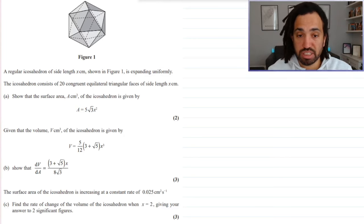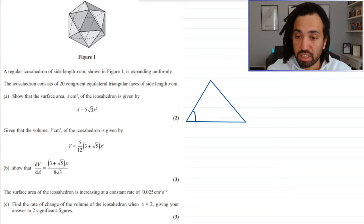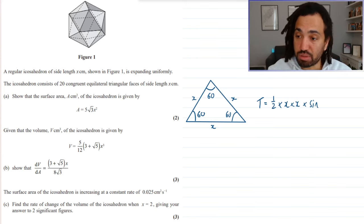So, we have an icosahedron, which consists of 20 congruent equilateral triangular faces. Show that the surface area is given as 5 root 3 x squared. Okay, so let's just quickly draw one of the faces. It looks something like that. It's equilateral, so obviously each of the angles is 60 and all the sides are the same and we're told they're x. So, the area of one triangle will be equal to a half times by x times by x times by sine of the angle 60.